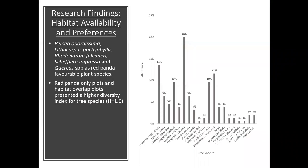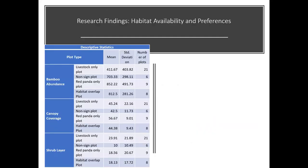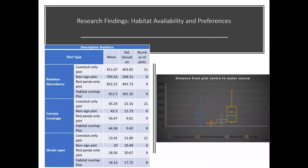Talking about the research findings: in total, 21 different tree species were recorded from red panda potential habitat area. Here listed are some of the common species preferred by red panda. Red panda only plots and habitat overlap plots presented a higher diversity index for tree species. The bamboo abundance was maximum in red panda only plots. Canopy coverage in different plot types ranged from 40 to 60%, with red panda only plots having the highest coverage. However, the percentage coverage of the shrub layer was comparatively lower in livestock only plots, specifically in red panda only plots and habitat overlap plots.